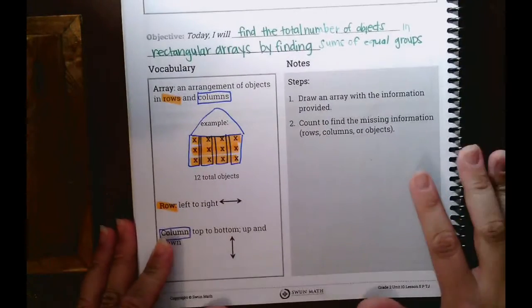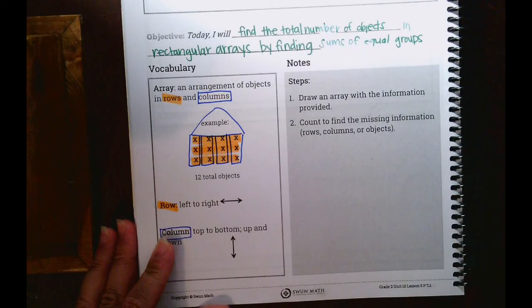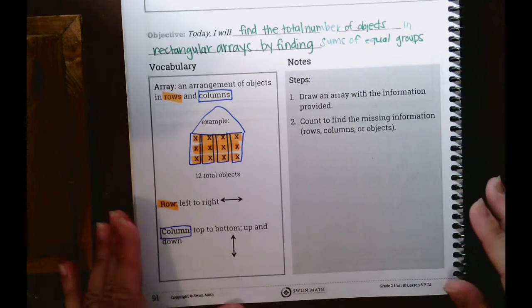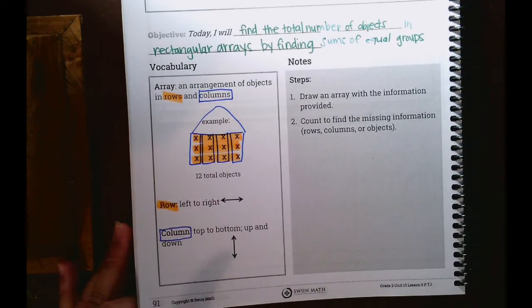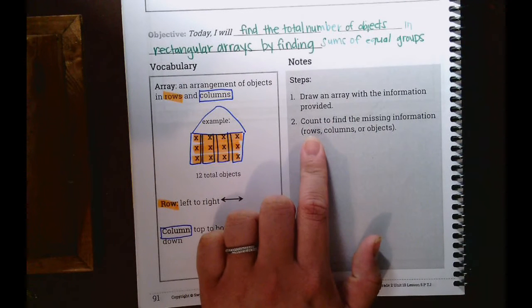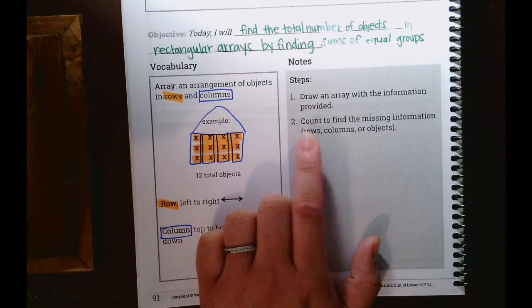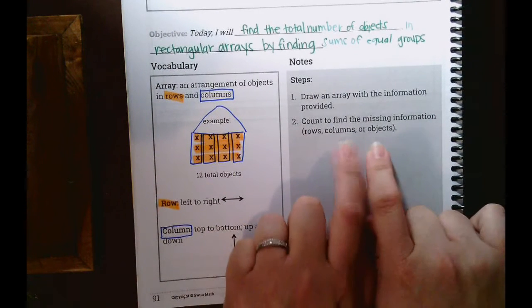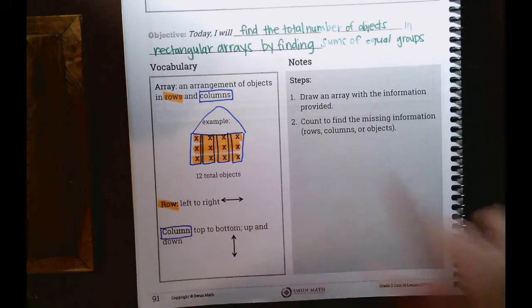All right. So for our steps, number one is draw an array with the information provided. So we're going to have a word problem, some of a word problem. They're going to give us instructions, and we need to draw an array based on whatever they're asking us to do. Okay, number two says to count to find the missing information. Okay, so we're going to count whatever is missing. So if they give us how many columns and how many rows, we can figure out how many objects. Or vice versa. If they give us how many columns and how many objects, we want to figure out how many rows there are. All right, let's jump right in to our input model.